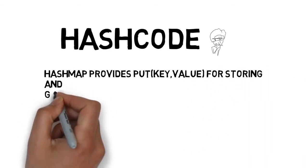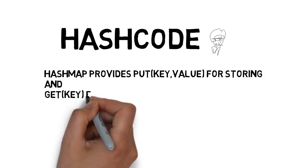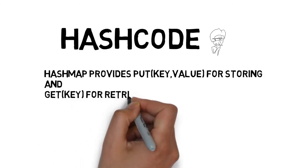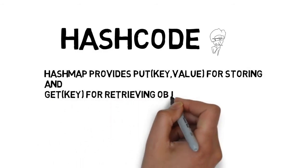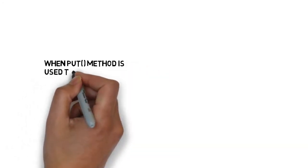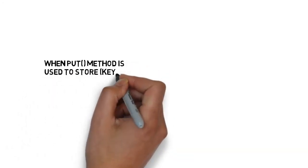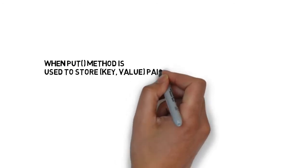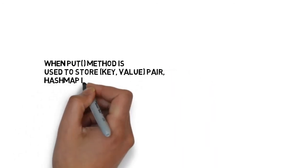HashMap provides put key and value pair for storing objects, whereas get key for retrieving objects. When put method is used to store key and value pair, the HashMap implementation calls hash code on the key object to calculate the hash that is used to find a bucket where entry object will be stored.